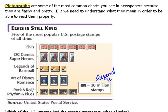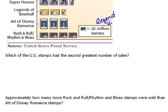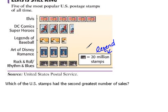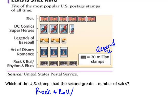Let's answer some questions using this pictograph. The first question asks: which US stamp had the second greatest number of sales? Looking at the pictograph, Elvis stamps have the most icons, so that's the greatest. For second place: Rock and Roll and Rhythm and Blues has four icons, Legends of Baseball has three and a half, Art of Disney Romance has three, and Superhero stamps has two and a half. So Rock and Roll and Rhythm and Blues is the second greatest in sales.